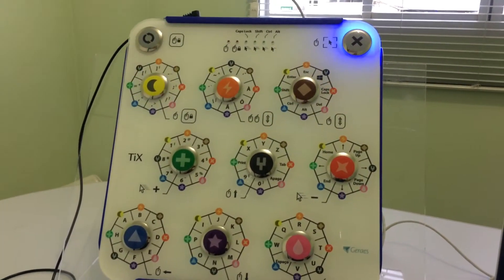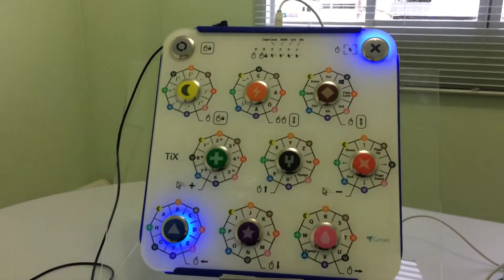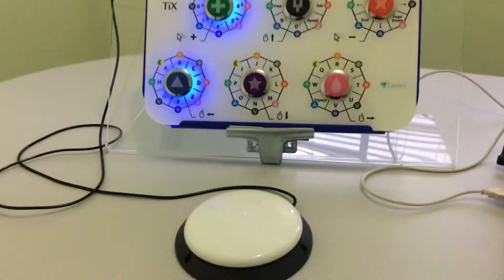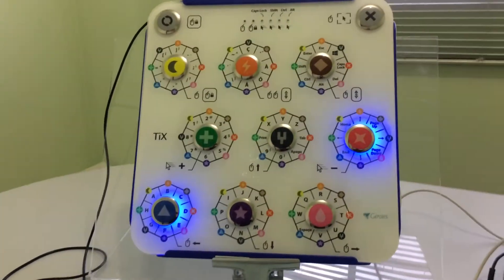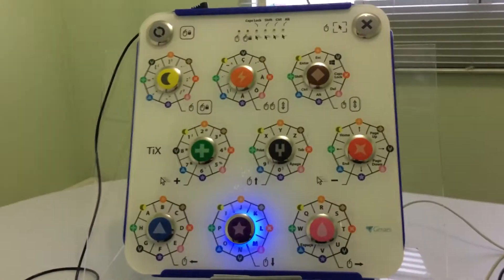For example, to type letter A, I need to press the blue button followed by the yellow button. So, when the blue button is lit, I press the button switch and afterwards, when the yellow button is lit, I'm going to do the same thing. By doing so, I've typed letter A on the screen.